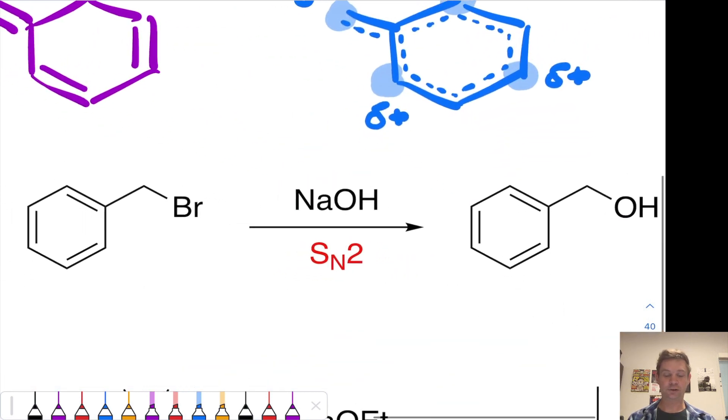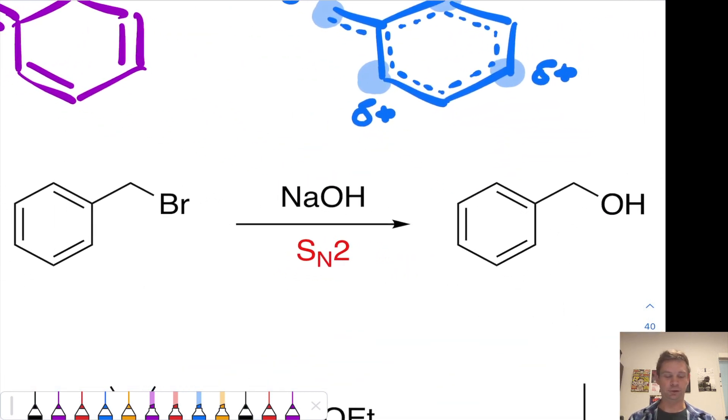Here's an example of an SN2 reaction of benzyl bromide, where this carbon is relatively electrophilic as a result of the stabilization of positive charge at that position. So hydroxide anion can pretty easily come in and displace bromide in an SN2 elementary step to give benzyl alcohol quite rapidly.